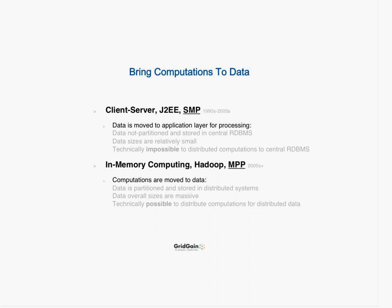In-memory computing inverts what you might call the normal application architecture. In client-server, J2EE, and similar systems, your data resides in a centralized repository — a database or file. To process something, you reach into that database, take the data out, process it on your application tier, and return result sets. Things are moved around, not partitioned. With in-memory computing, you can actually send the applications to the data — something that's impossible with traditional centralized database architectures, even clustered ones.